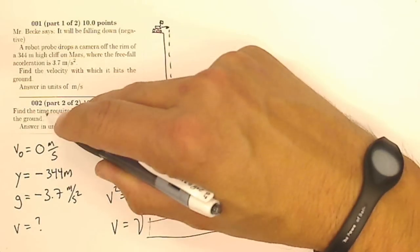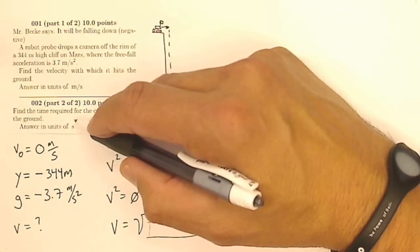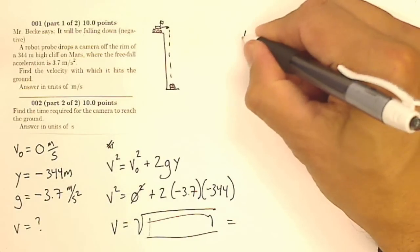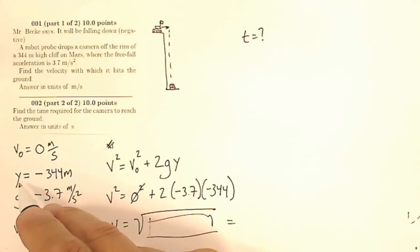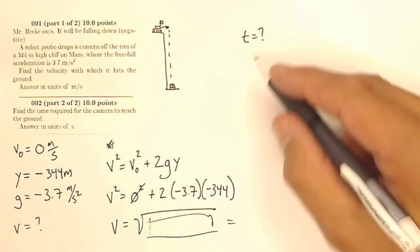Now, part two of two says find the time required for the camera to reach the ground, so now I'm looking for the time. I do have an initial velocity, a height that's falling, the gravitational acceleration, now I have a final velocity as well, and I'm looking for the time.